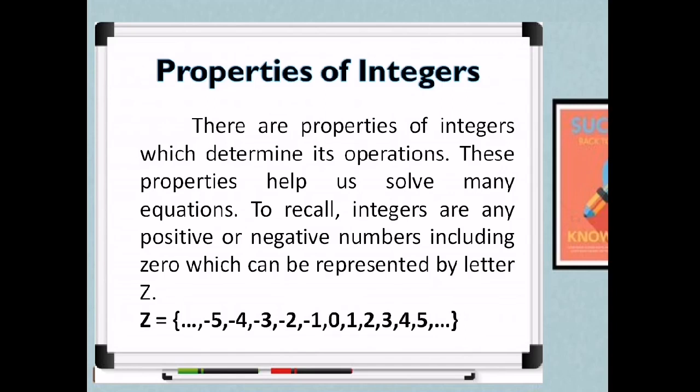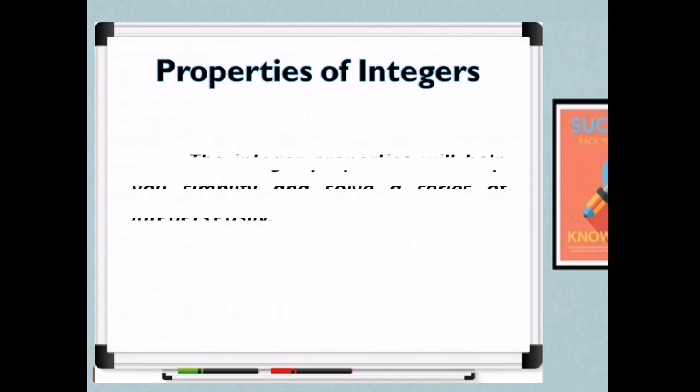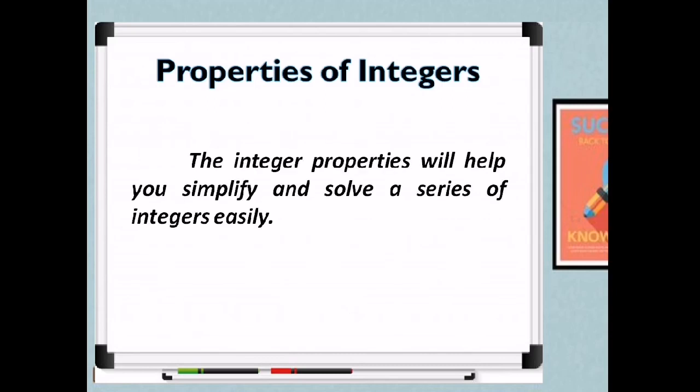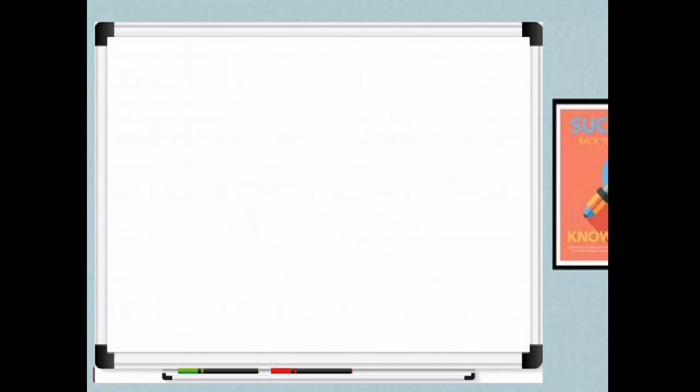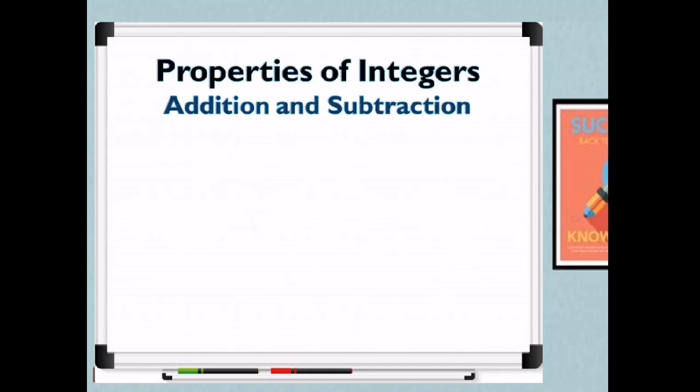To recall, integers are any positive or negative numbers including 0, which can be represented by the letter Z. So the sets of integers include negative numbers, 0, and positive numbers. The integer properties will help you simplify and solve a series of integers easily. So we have the properties of integers for addition and subtraction.